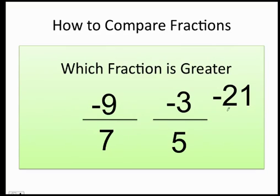Seven times negative three is negative twenty-one, and then negative nine times five is negative forty-five. Can you tell me which one is greater? Don't forget, negative twenty-one is greater than negative forty-five because negative twenty-one is closer to zero than negative forty-five. My answer is going to be negative nine over seven is less than negative three over five.